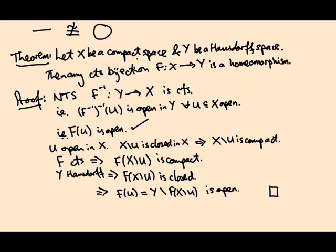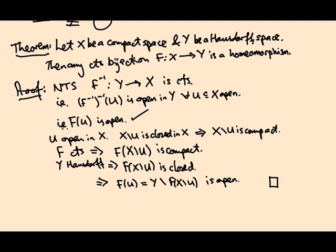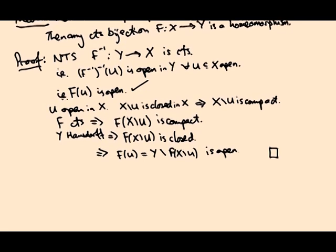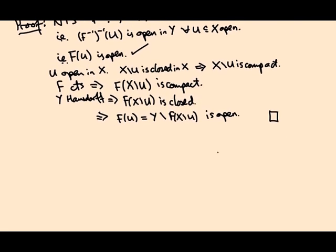So if you have a compact space mapping to a Hausdorff space, and that map is a continuous bijection, then actually it's a homeomorphism. So let's see an example of this being applied to identify two topological spaces. So we saw that the two-dimensional torus can be thought of as a subset of three-dimensional space.